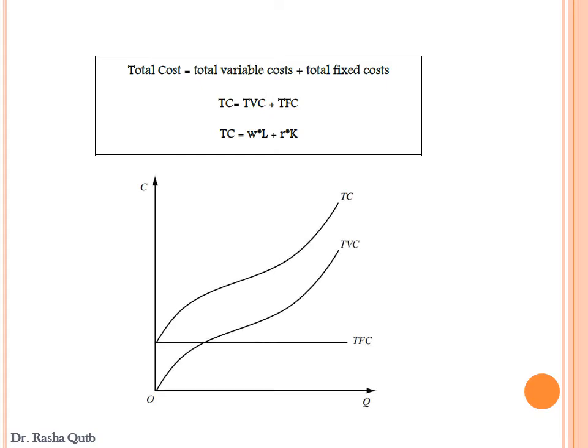Graphically, the shape of total cost and total variable cost reflects the law of diminishing return in the short run. Total fixed cost is represented by a horizontal line. Total variable cost starts from the origin. The shape of the total cost curve and total variable cost curve is the inverse of the shape of the total product curve. As we add more labor: total product first increases at an increasing rate and total cost increases at a decreasing rate; then total product increases at a decreasing rate and total cost increases at an increasing rate; finally total product decreases and total cost increases.